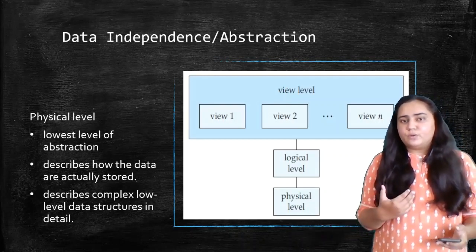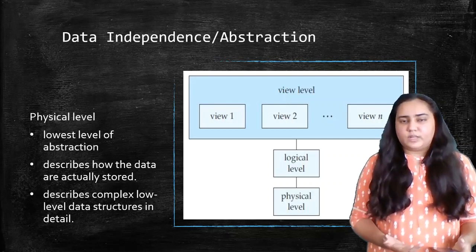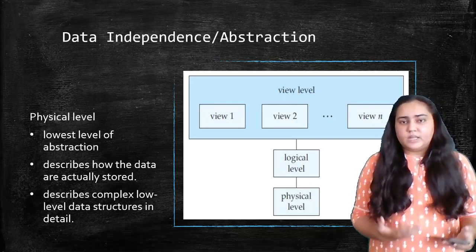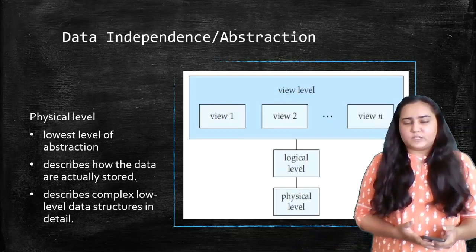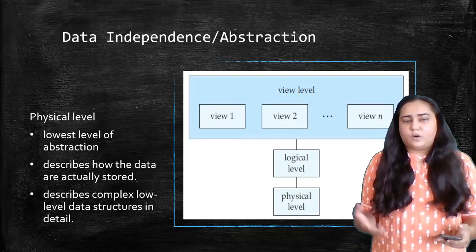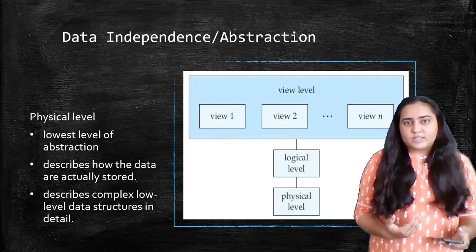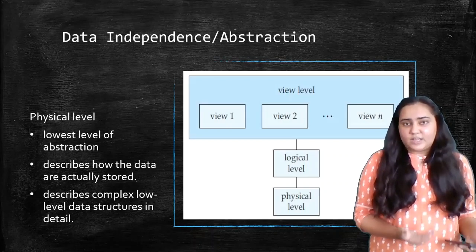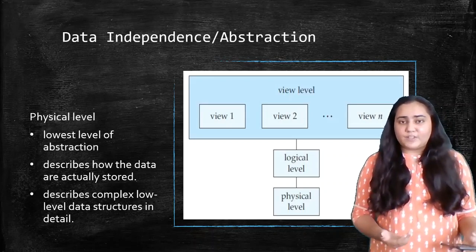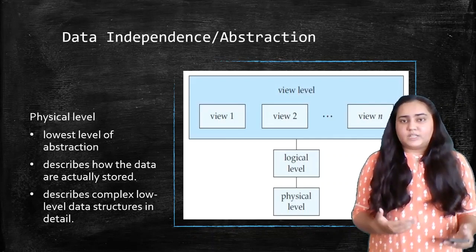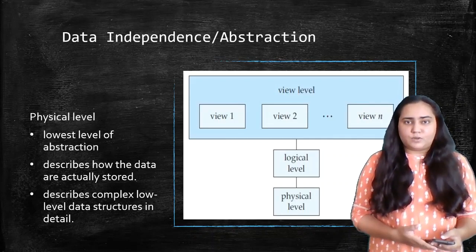Because we do not know anything about the physical level but are still able to work with our database, it is known as abstraction — all that information is hidden from us. And it is good that it is hidden from us because we can work without having to worry about how the data will actually be stored in secondary memory.